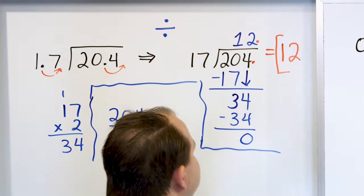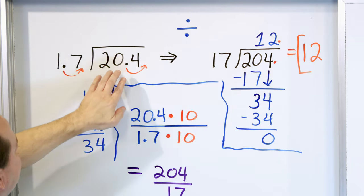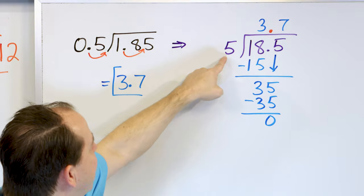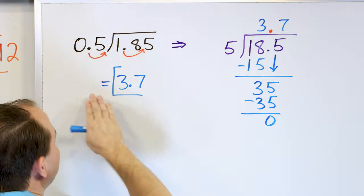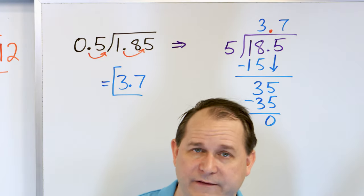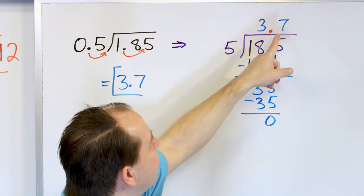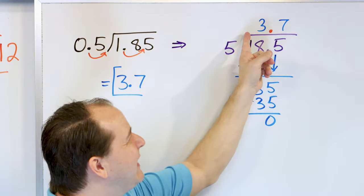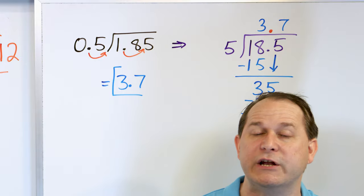So the answer to the whole problem is 3.7. In the first problem, we did the division and got an answer of 12 — a whole number — meaning 1.7 fits into 20.4 exactly 12 times. When we do 1.85 divided by 0.5, it's going to fit three whole times but not a fourth. It's only going to go 3.7 times — because if we get to 3.8 and 3.9 we get closer and closer, then roll over to 4.0. So 3.7 means it divides three whole times and almost four, but not quite.